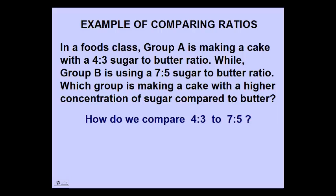So the math question becomes, how do we go about comparing a 4 to 3 ratio with a 7 to 5 ratio?